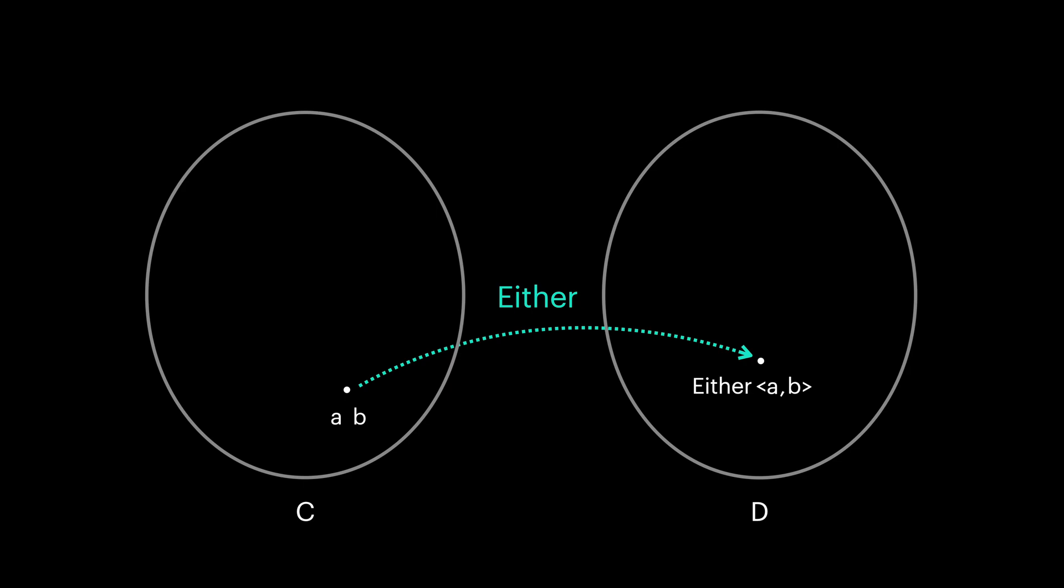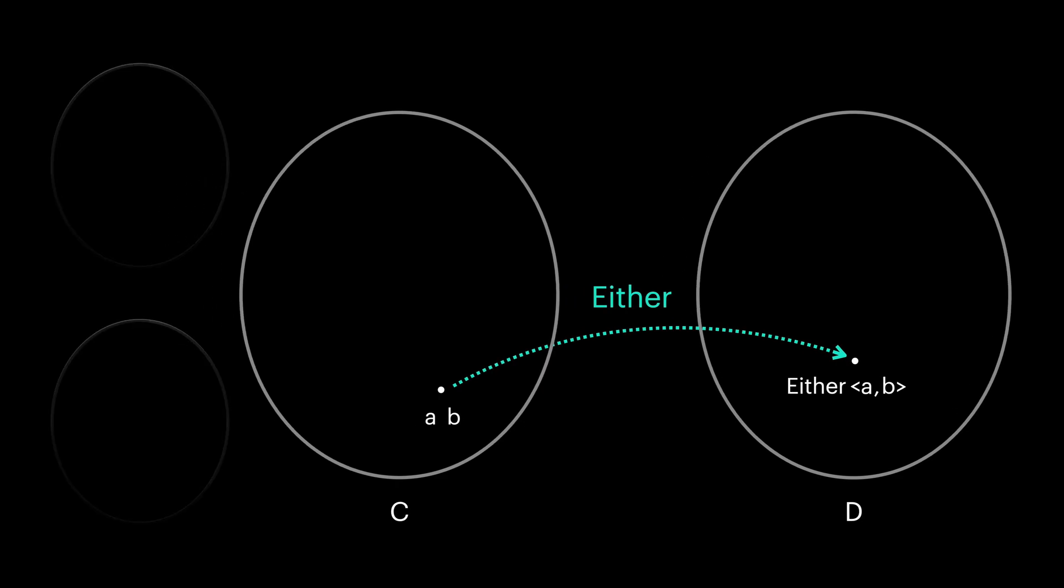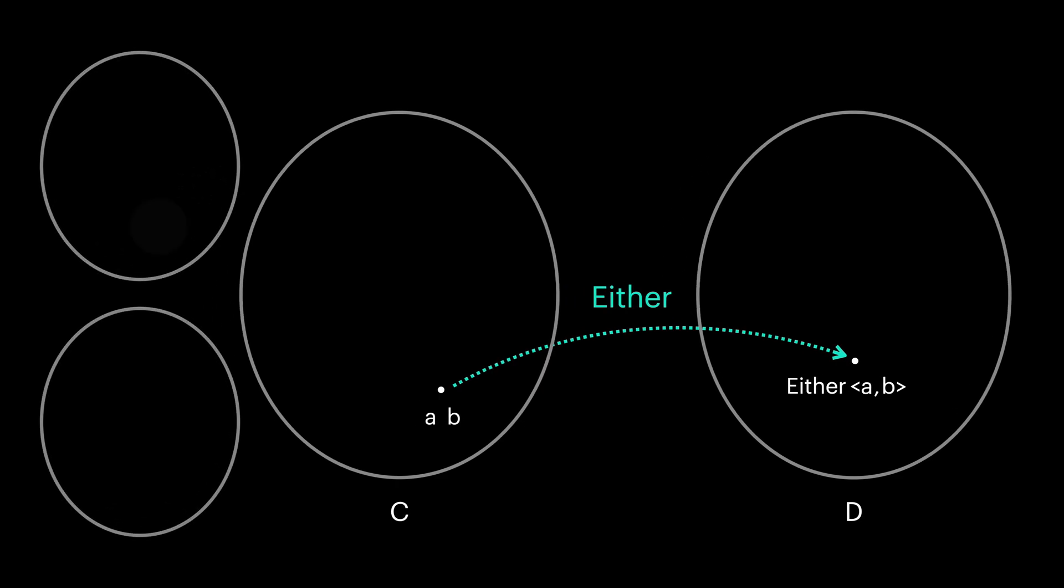Now our mapping is from an object representing A and B to either of A and B. It seems that this mapping is from two things to one thing. As a matter of fact, our category C can be separated into two different categories. Each has one of the labels as an object. More accurately, category C is a product of two categories. And the way we define this product is for any pair of objects in initial categories, we will have an object in our product category C.